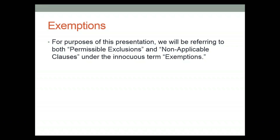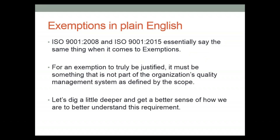For today's presentation, I'm going to refer to these items collectively under the innocuous term 'exemptions.' Exemptions is not a term officially used in the standard, but it's very easy to understand and rolls off the tongue a little easier than 'non-applicable clauses.' This concept is unchanged — if you go back to ISO 9001-2000, it's the same general idea. If an exemption is truly going to be justified, it has to be something that is not part of the quality management system as defined by the scope.